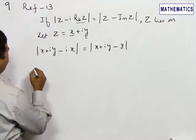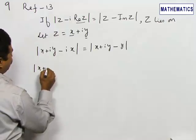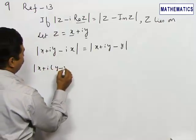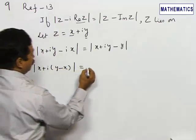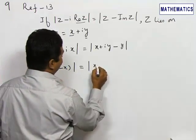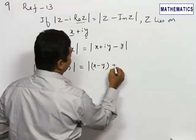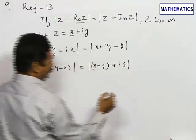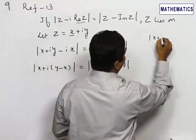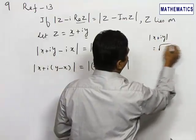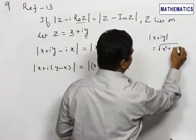Separating the real and imaginary parts: modulus of x plus i times (y minus x) equals modulus of (x minus y) plus iy. We know that modulus of x plus iy equals square root of x squared plus y squared.